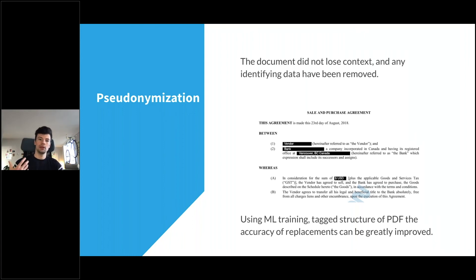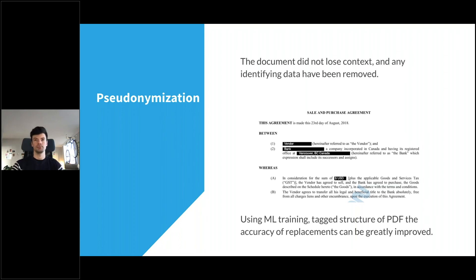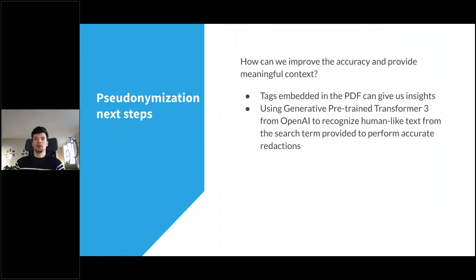How can we improve this process and make it better? Using the tag structure of a PDF, we can know what type of content we're dealing with. Using ML training that receives a lot of redacted data to be replaced with something else, we can train it to provide meaningful context without any identifying information. Here are a few approaches to improving that process, and how I think this process will be improved in the future.